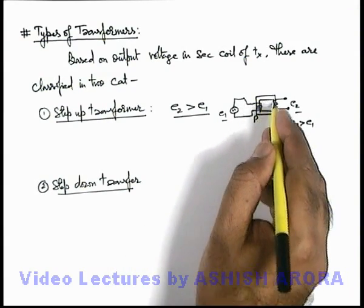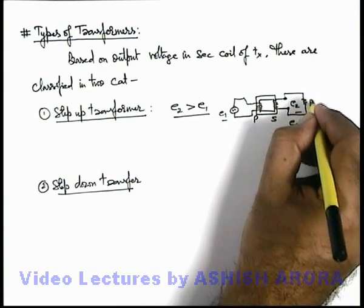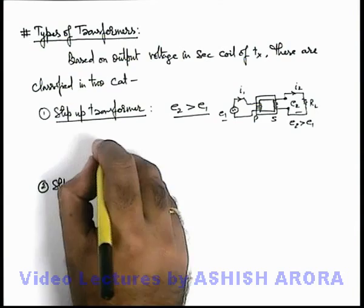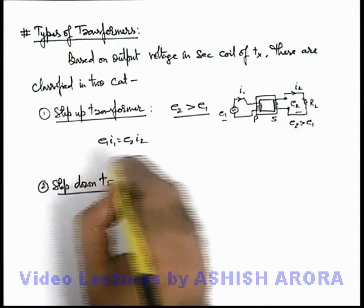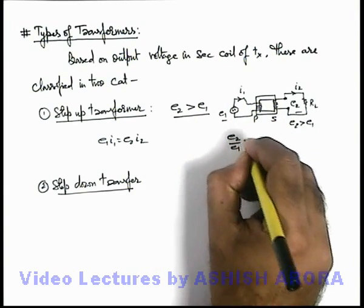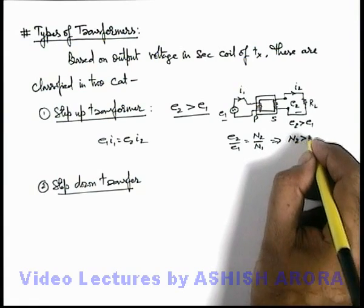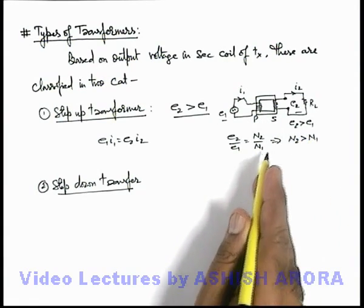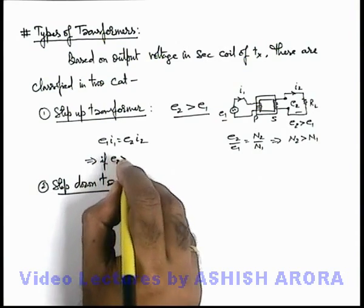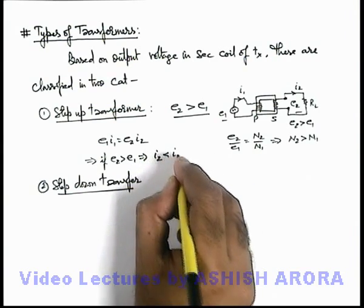As we know, in the case of an ideal transformer power remains constant. If output is connected across a load resistance and a current i2 is drawn from it, and i1 is the current in the primary coil, we can write: e1·i1 = e2·i2. Since e2 is more than e1, by the transformer equation e2/e1 = n2/n1, if e2 > e1, then n2 must be more than n1. Using the turns ratio we can adjust the required output voltage. If e2 is more than e1, then the current at the secondary coil i2 will be less than the current in the primary coil i1.